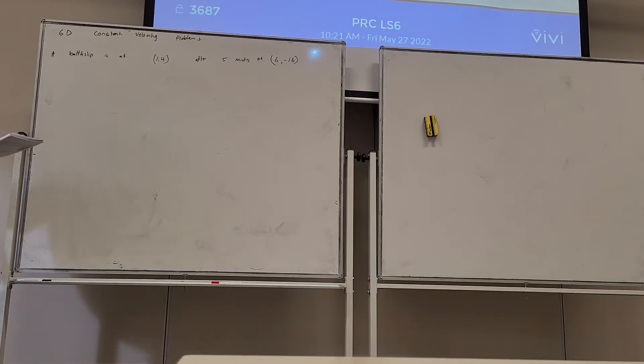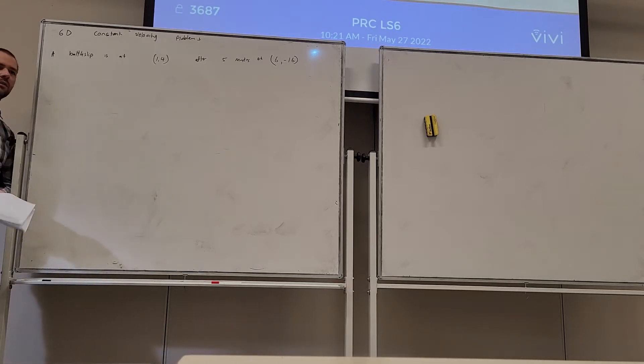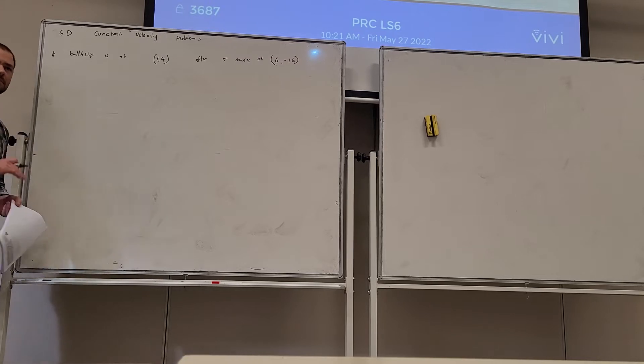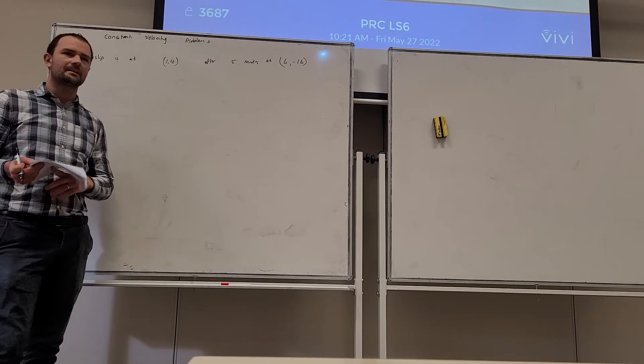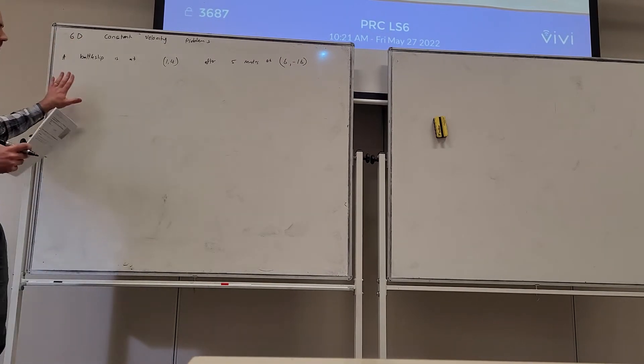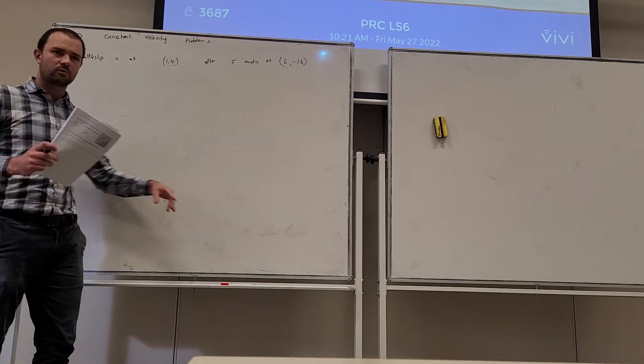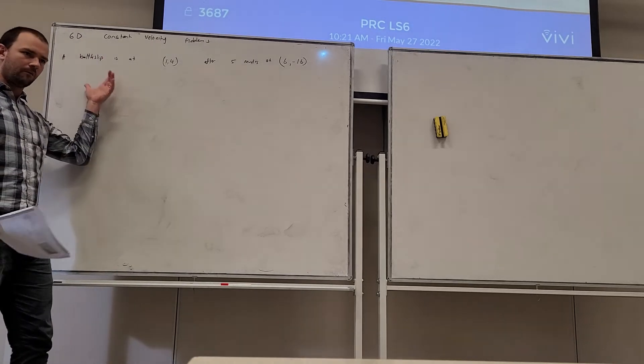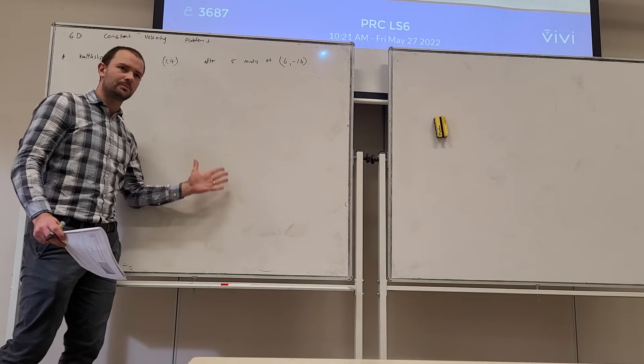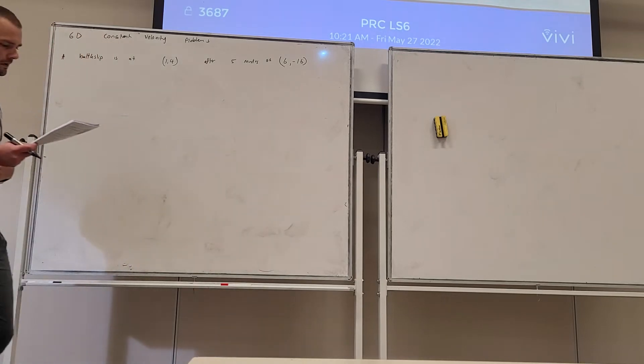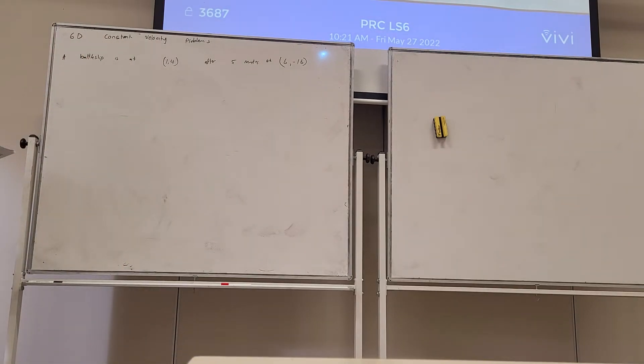Today we're going to go through 16 constant velocity problems and we're going to be alternating between two dimensions and three dimensions of vectors. Here we're just looking at vectors in two dimensions and we have a practical application of the parametric description of the equation of a line. So determine the parametric equations for this line.